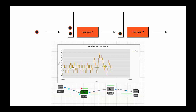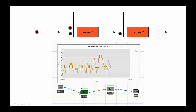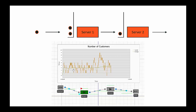The basic idea is to create our computer model that mimics the behavior of the system, execute the model, and watch it as it evolves over simulated time. Our tandem queuing system is a fairly simplistic system, and our second example is a little bit more involved.